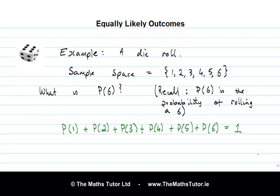Here's that fact written down as an equation: the probability of 1, plus the probability of 2, plus the probability of 3, plus the probability of 4, plus the probability of 5, plus the probability of 6 equals 1. Unfortunately, all of these probabilities are unknown as yet, so we have one equation and 6 unknowns.